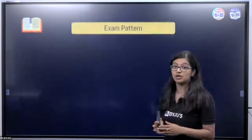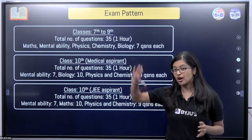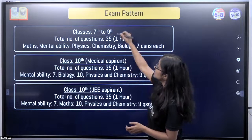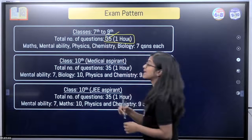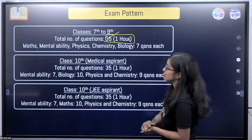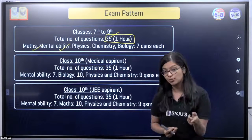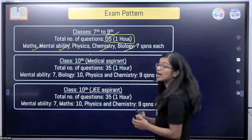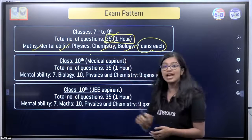Let's move on to the exam pattern — this is very important. You can take a screenshot of the pattern shown here. For Classes 7th to 9th, the total number of questions is 35 and the exam will be for 1 hour. The topics you will be tested on are Maths, Mental Ability (aptitude), Physics, Chemistry, and Biology — with seven questions each, making a total of 35 questions.